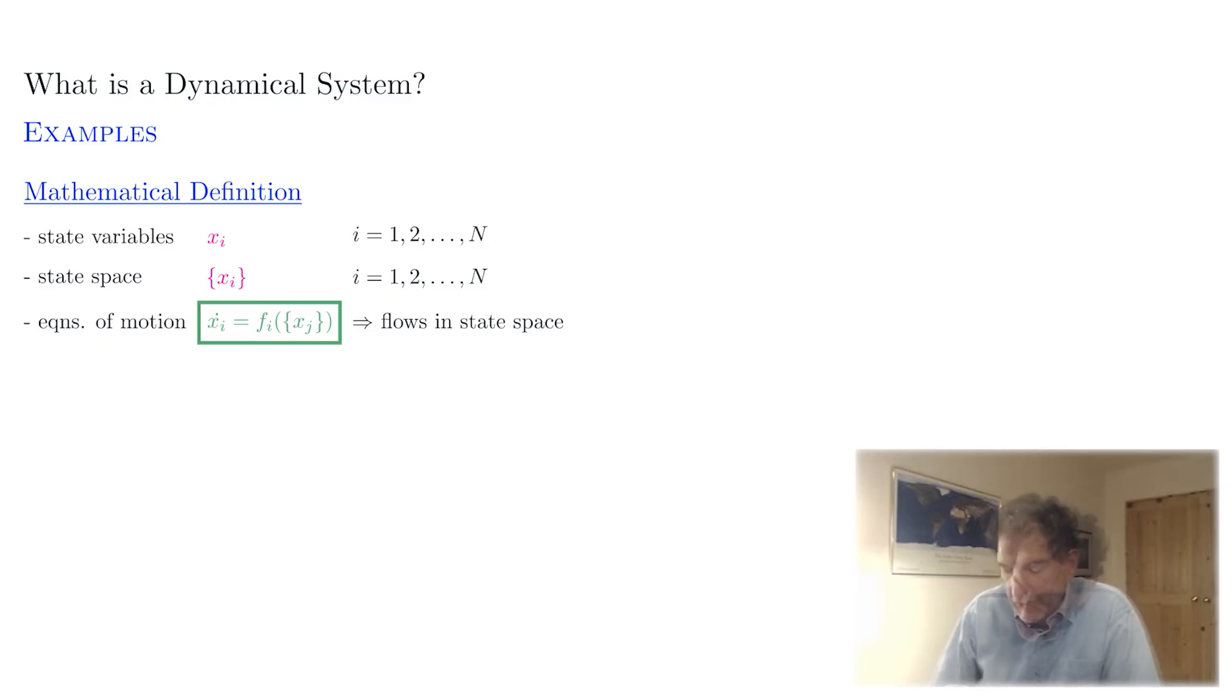Now this basic equation of motion has a couple of important features that simplify the description considerably. First point is notice that this equation is first order in time. There's no higher order derivatives. But one thing to point out is that if you had a higher order system, it always can be reducible to first order by an appropriate change of variables.